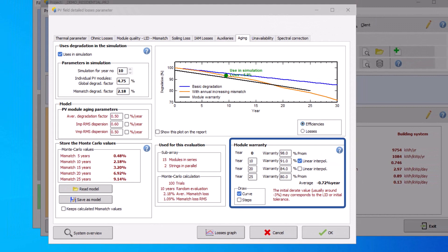The model warranty section contains values usually specified by the PV module manufacturer. These values are not stored with the PV module properties in the PAN file. They have to be defined in this dialog.